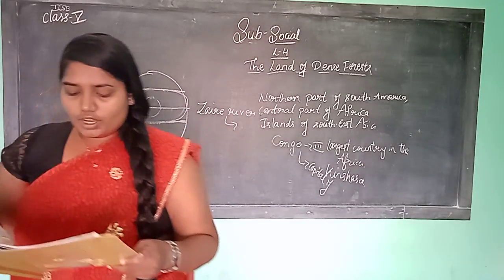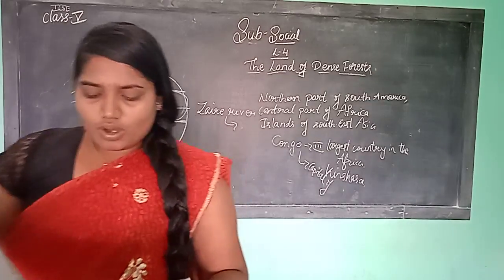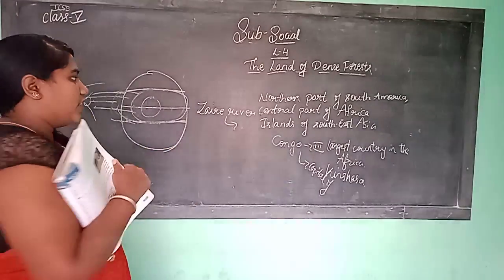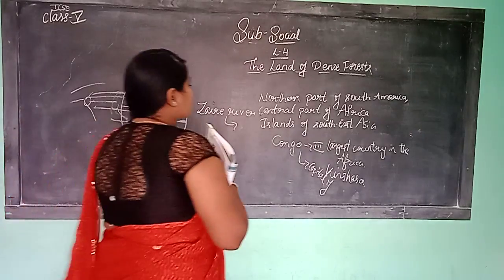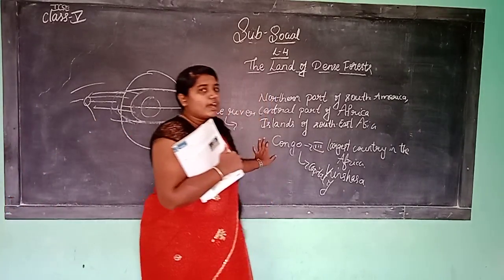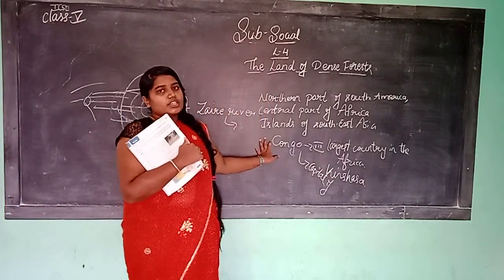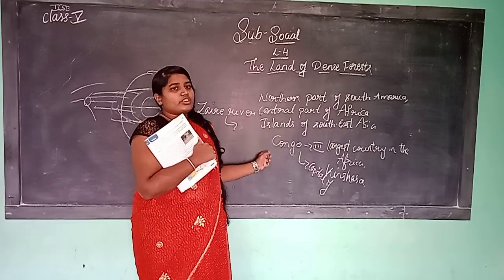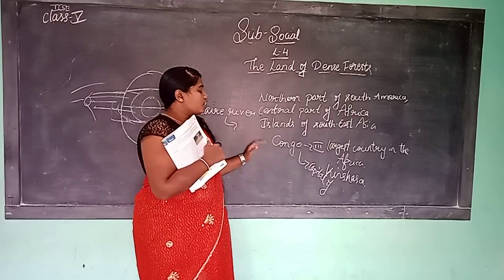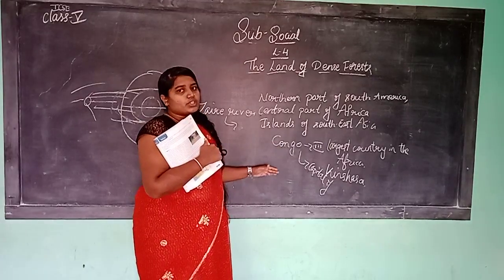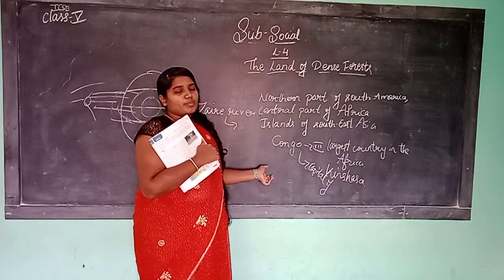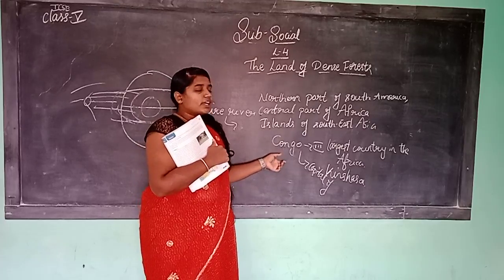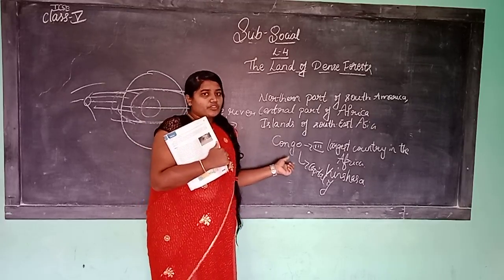The Congo River is joined by a number of tributaries from north and south of the equator. There are many tributaries joining from north and south of the equator.